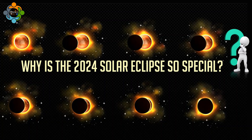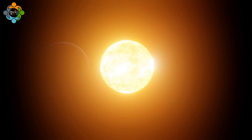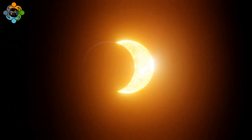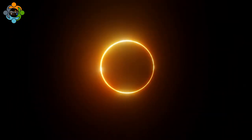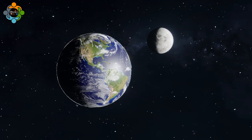But first, why is the 2024 solar eclipse so special? Let's find out. A solar eclipse occurs when the moon passes between the sun and the earth, casting a shadow on the earth's surface. This mesmerizing phenomenon captivates people around the world as they witness the sun being partially or completely obscured by the moon.